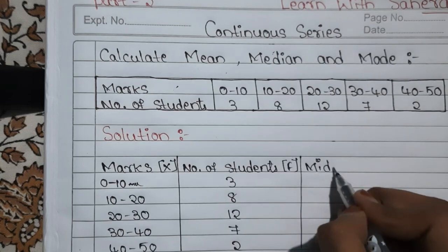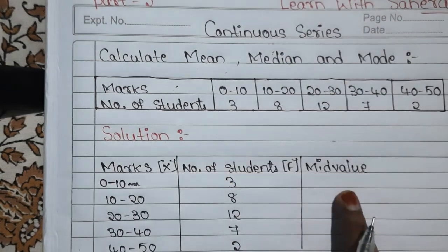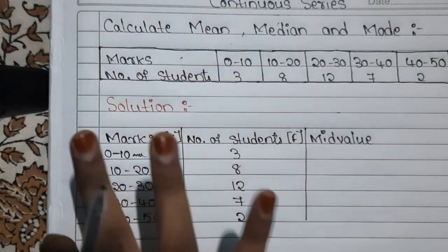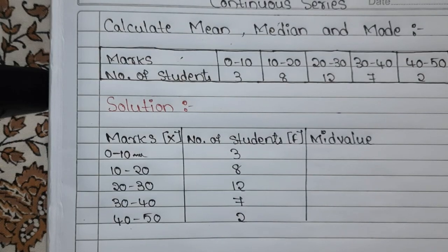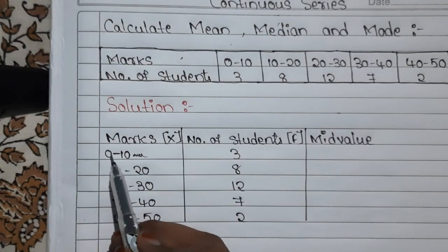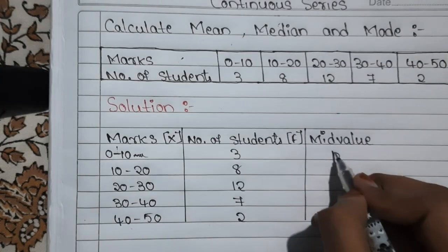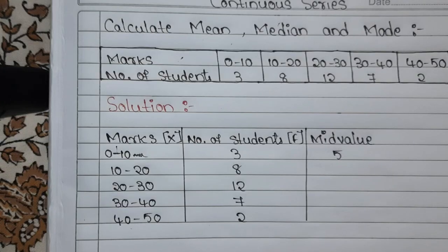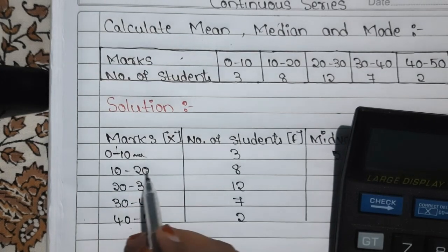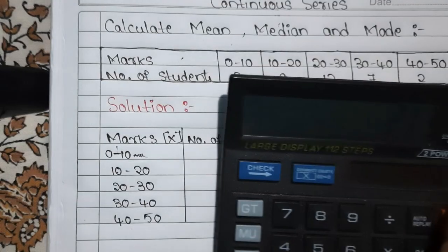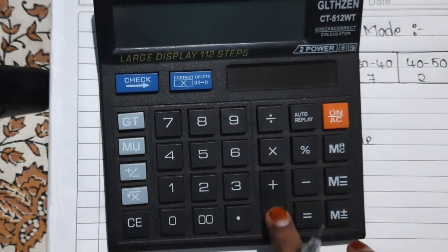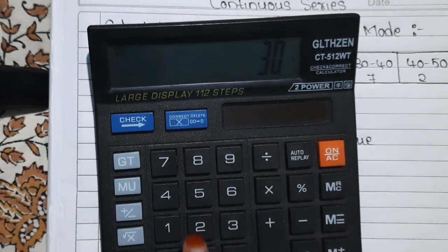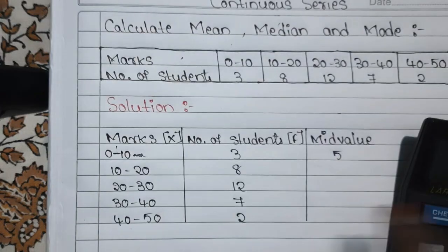When calculating mean in continuous series you have to use the mid value, but in discrete series there is no need for mid value. The mid value is the number lying between both class boundary values. For example, the mid value of 0–10 is 5. If the interval is not obvious, you add both boundary numbers and divide by 2. For example, 10 plus 20 equals 30, divided by 2 gives 15.